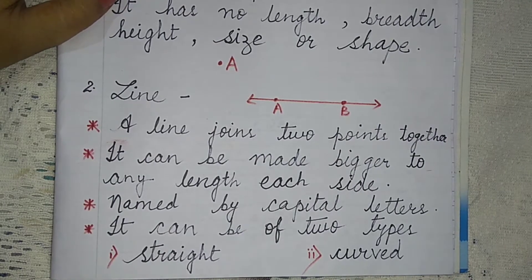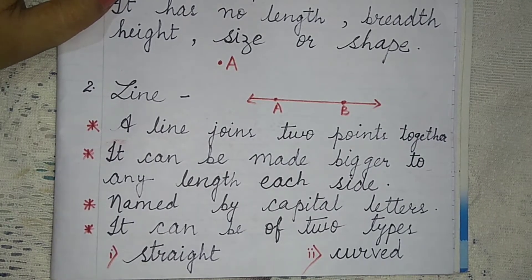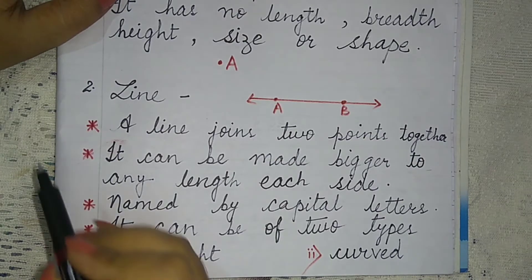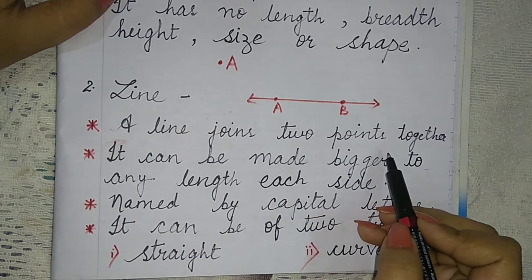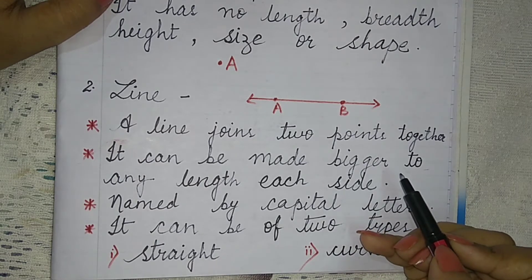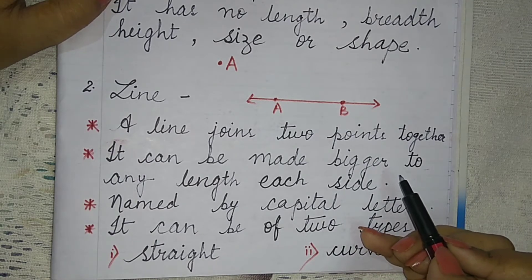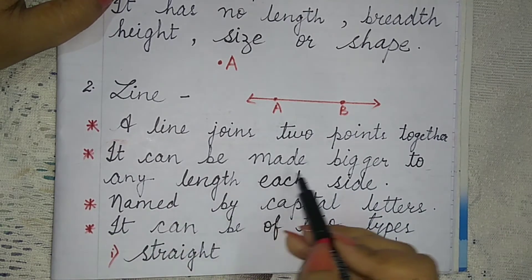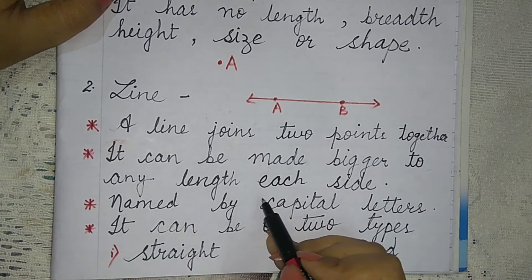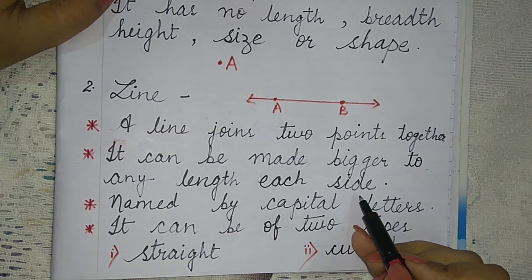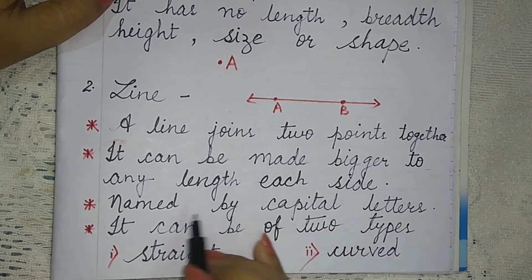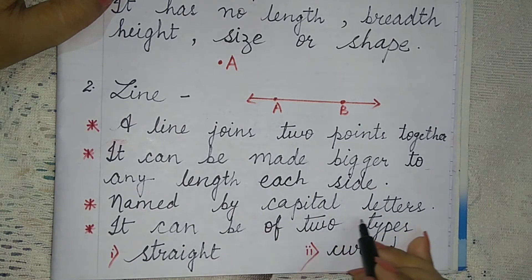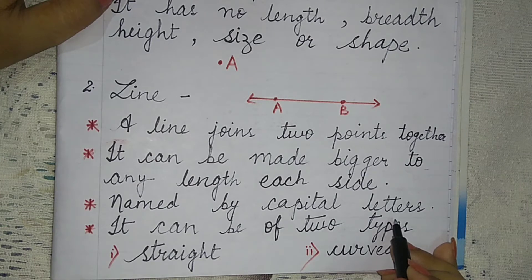Now comes to line. A line joins two points together. It can be made bigger to any length and each side. It is also named by a capital letter.